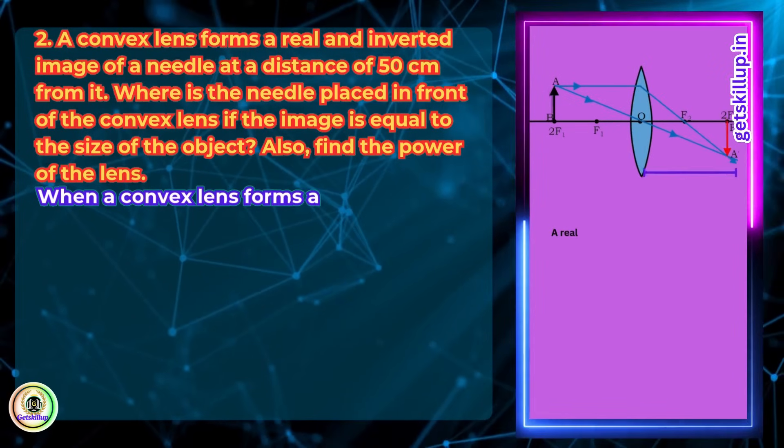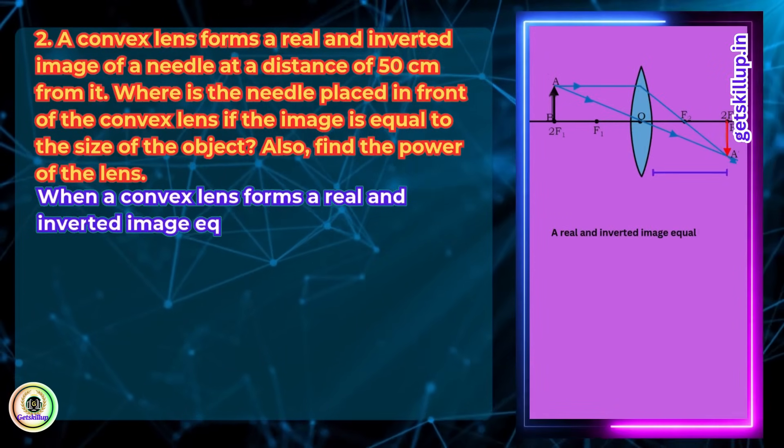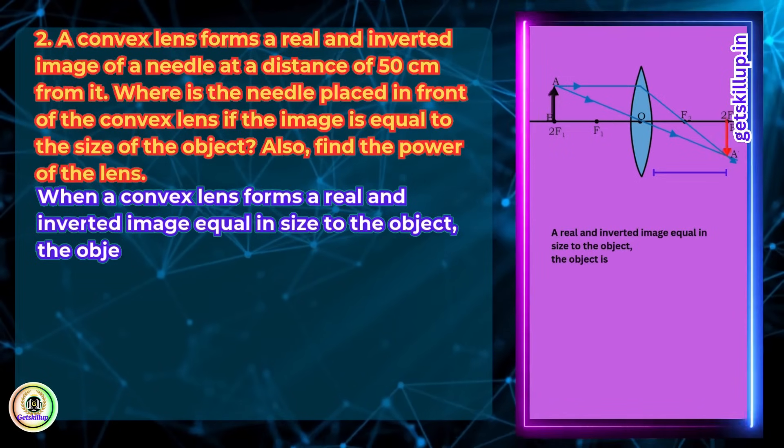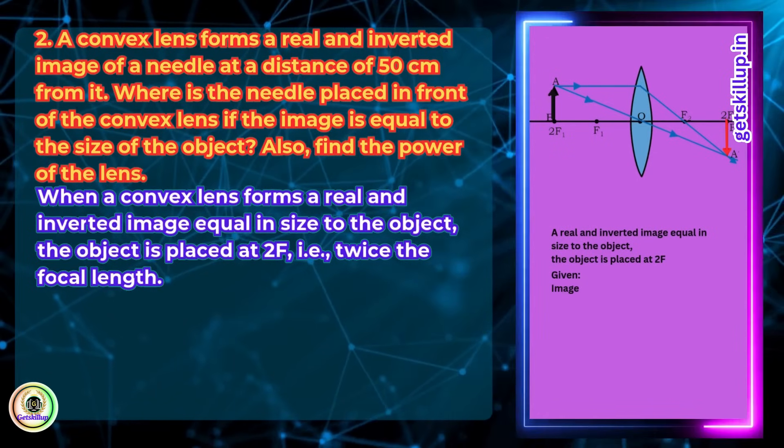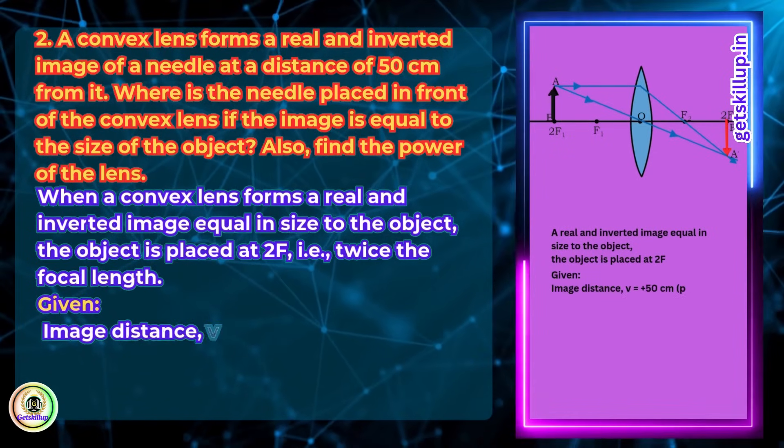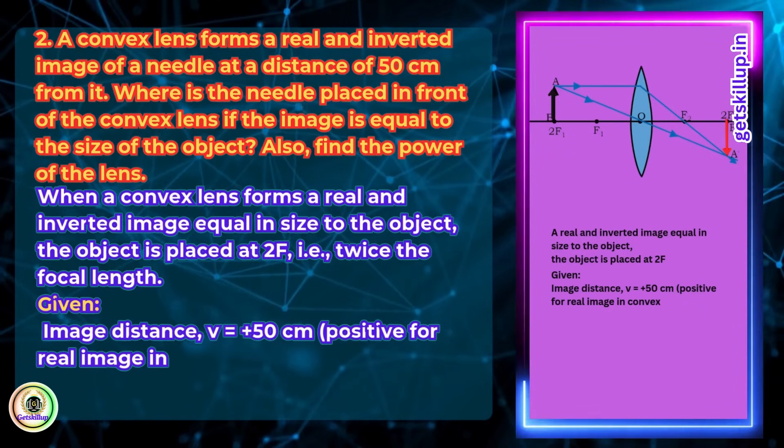When a convex lens forms a real and inverted image equal in size to the object, the object is placed at 2f, that is twice the focal length. Given: image distance v = +50 cm (positive for real image in convex lens).